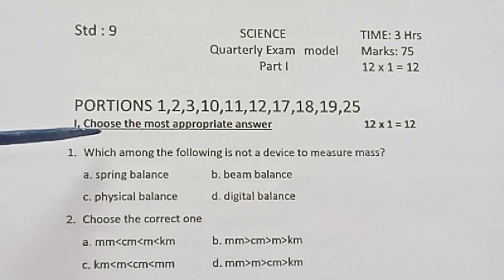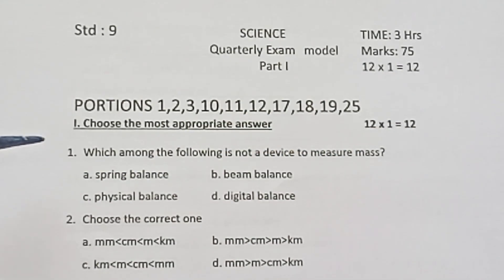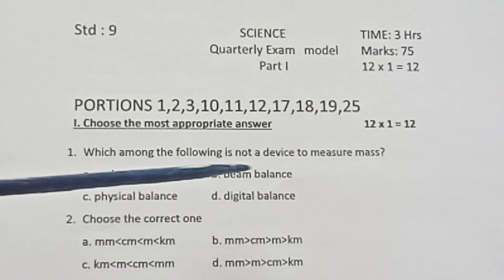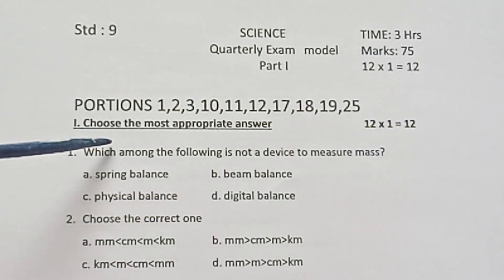Part 1: Choose the most appropriate answer. 12 into 1 equals 12 marks. First question: Which among the following is not a device to measure mass? A. Spring Balance, B. Beam Balance, C. Physical Balance, D. Digital Balance. All four options are correct.